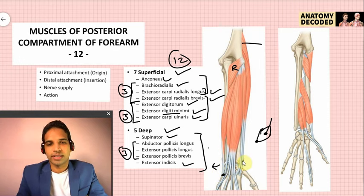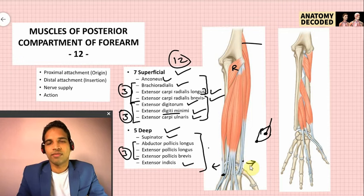Extensor carpi radialis longus and brevis cause extension at the wrist joint and, acting along with flexor carpi radialis, cause abduction at the wrist joint.